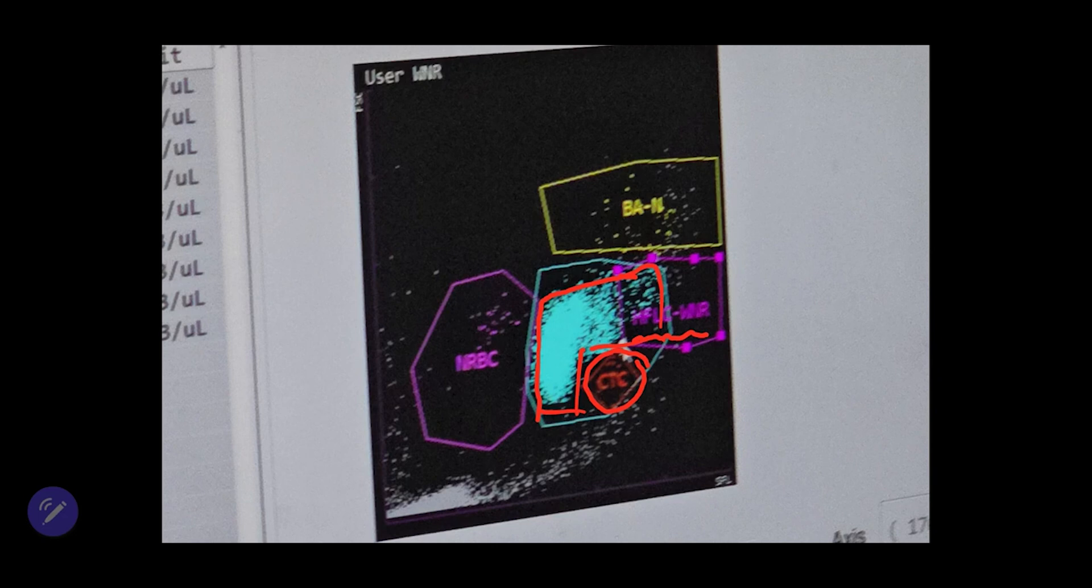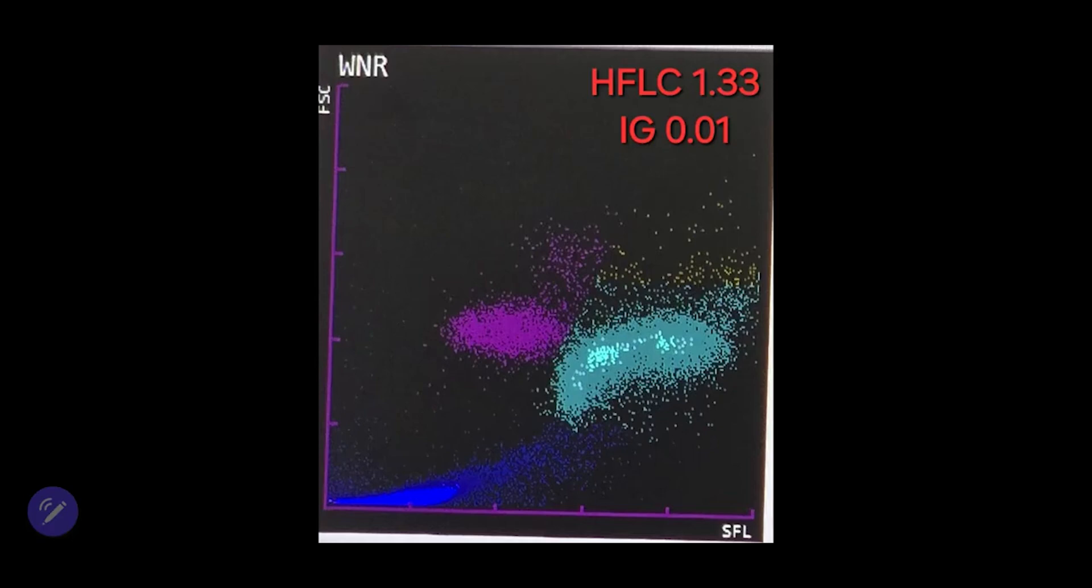The yellow area represents basophils, as we know. In this illustration, you can see that it extends quite far to the right. In such cases, the first thing the doctor should do is check which line it is on.